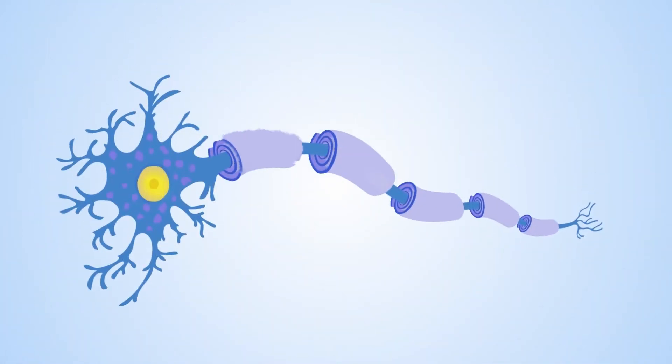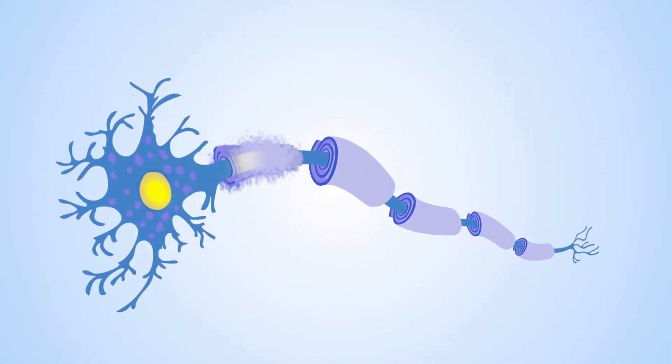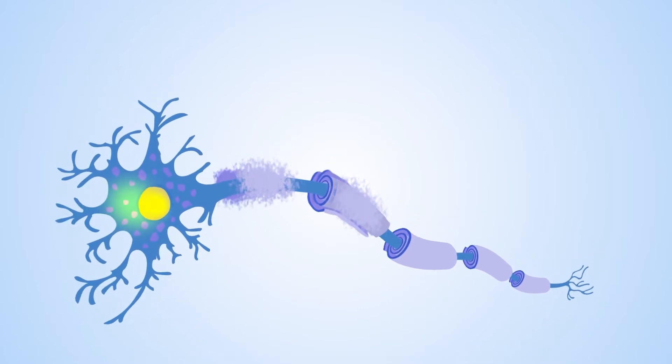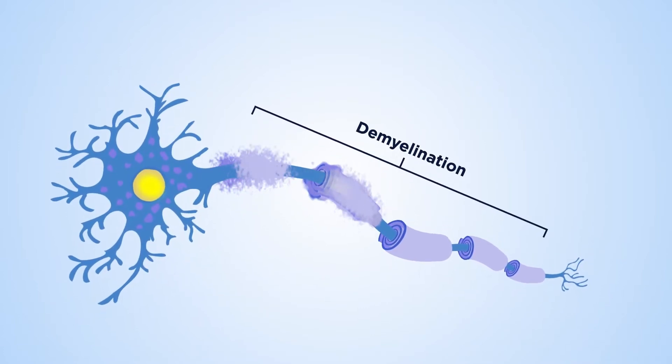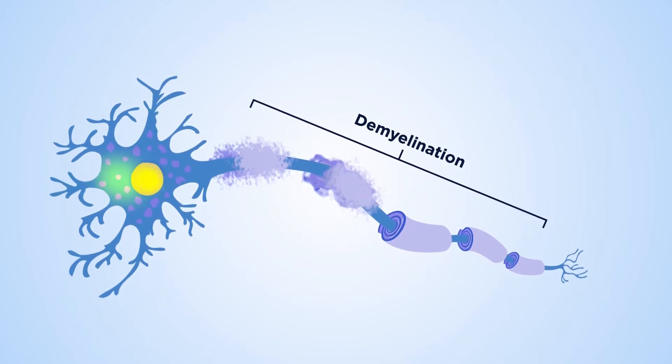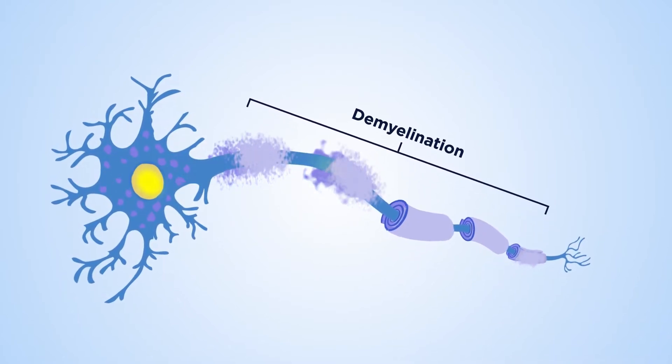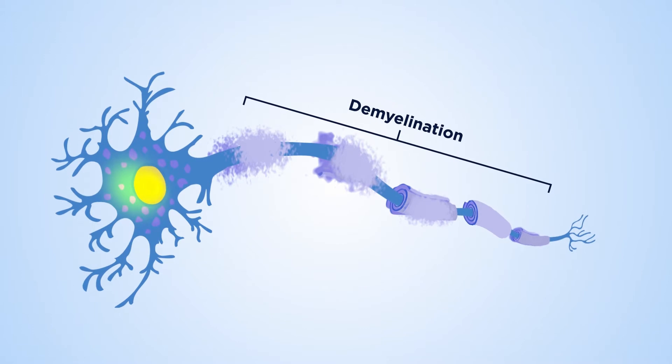In MS, an unknown trigger causes the immune system to attack and destroy healthy myelin. This demyelination disrupts the ability of the underlying axon to conduct electrical impulses to and from the brain.